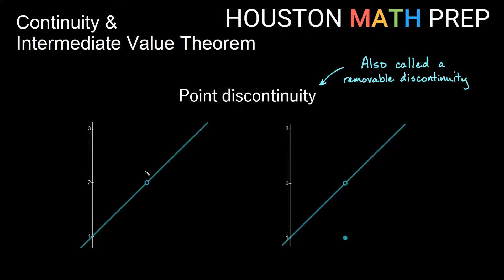The idea is if I were just to fill in one value, say at this hole, then it would be continuous — I would have a smooth graph with no breaks in it. Same thing if I were to take this y value where I'm defined and just move it inside of where that hole is, I would have a continuous graph that has no breaks. So a point discontinuity we'll also refer to as a removable discontinuity.